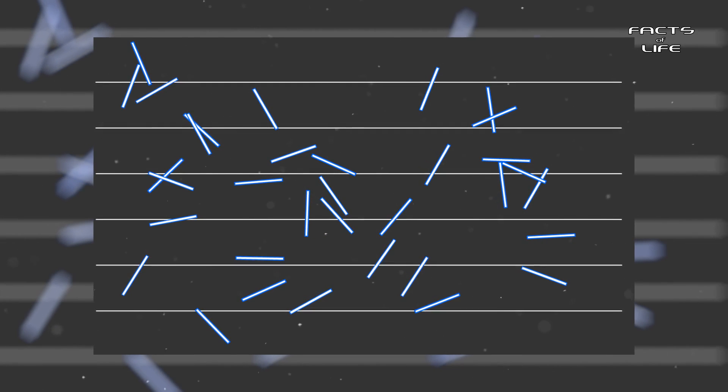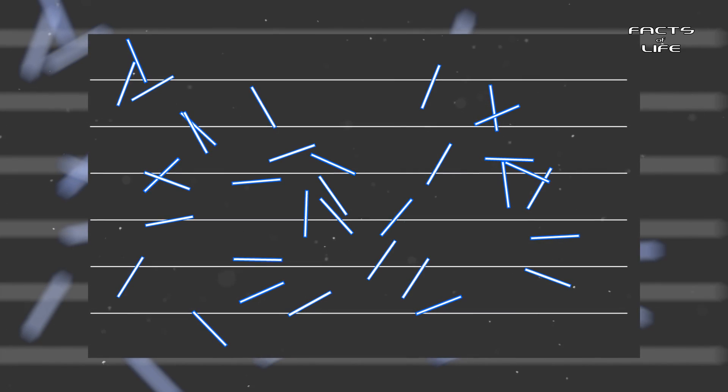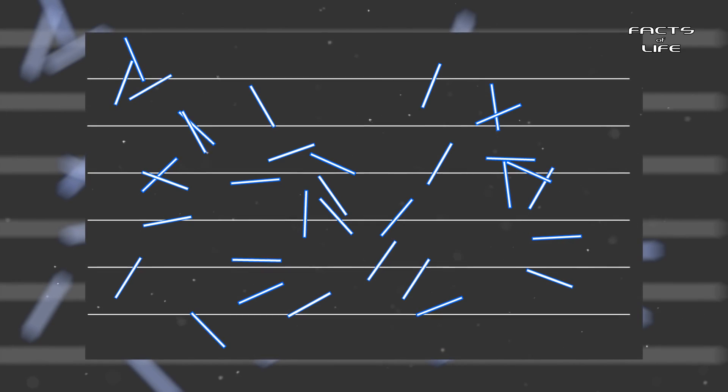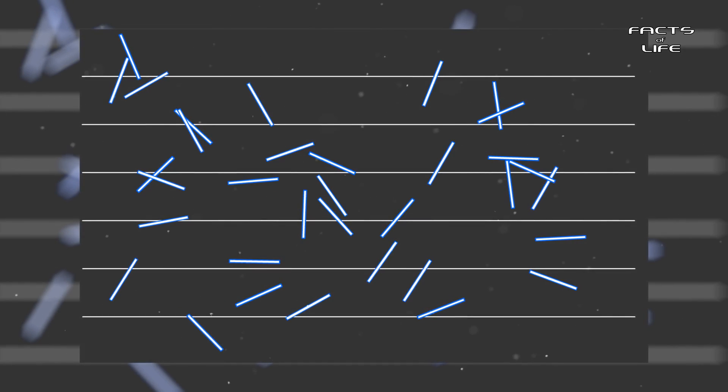This means that Pi could be theoretically calculated using this technique if one had enough patience to sit through enough trials, even though the experiment seems to have nothing to do with circles, or even rounded edges for that matter.